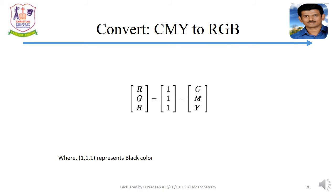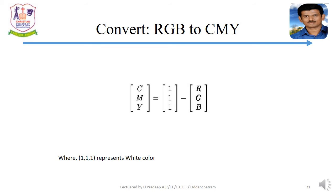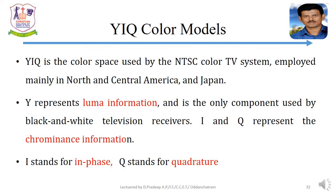From the CMYK color model we can retrieve the RGB color model, and from the RGB color model we can retrieve the CMYK color model. In the CMYK model, (1, 1, 1) represents black, while in the RGB model (1, 1, 1) represents white. Next is the YIQ color model, which is the color space used in the NTSC color TV system, employed mainly in North and Central America and Japan.